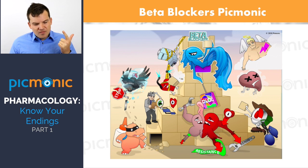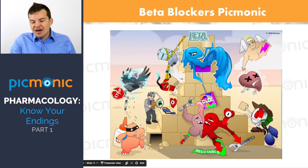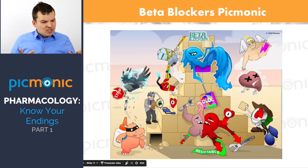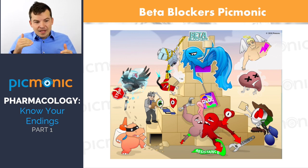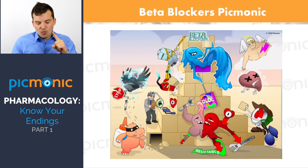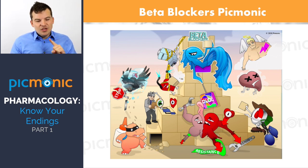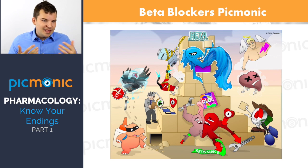A big thing to worry about with beta blockers: they can mask the signs of hypoglycemia — represented in Picmonic as a masked hippo with a glue bottle. Beta blockers block beta receptors, preventing the release of epinephrine. When blood sugar drops, your body normally releases epinephrine, causing tachycardia, sweating, and diaphoresis — but those symptoms are blocked.